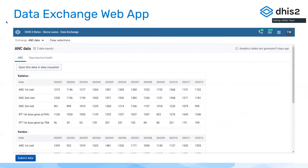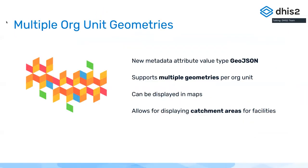Let's switch gears and go back into analytics territory to talk about geometry and how we can import and store multiple geometries. In version 2.39, we introduced a new metadata attribute value type called GeoJSON.